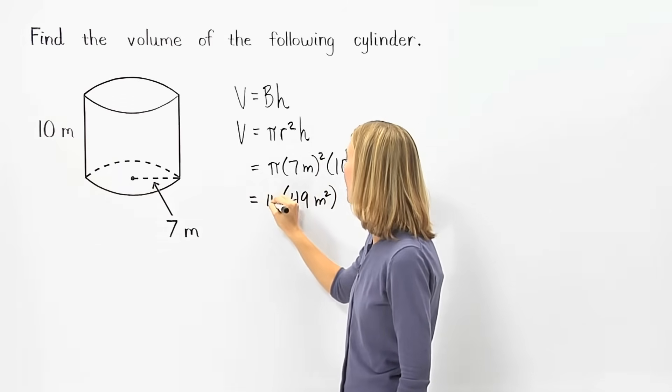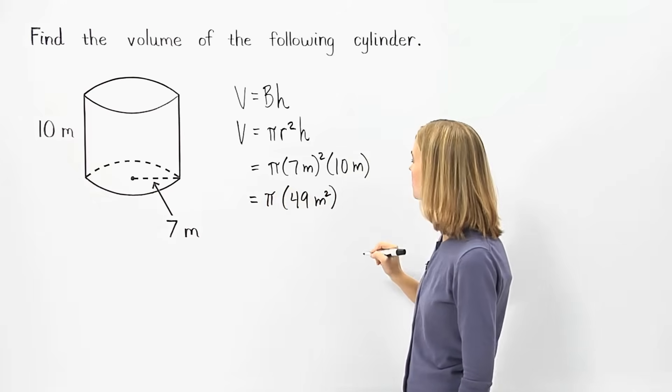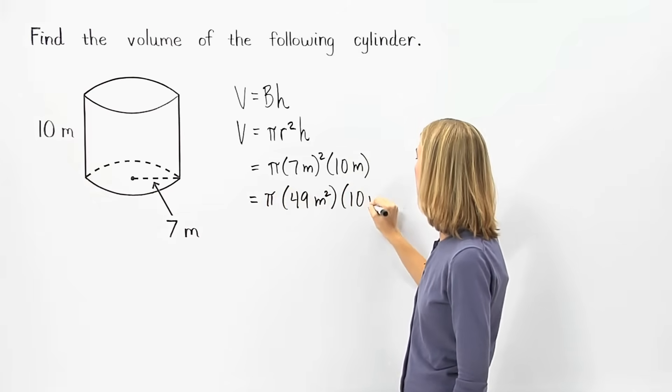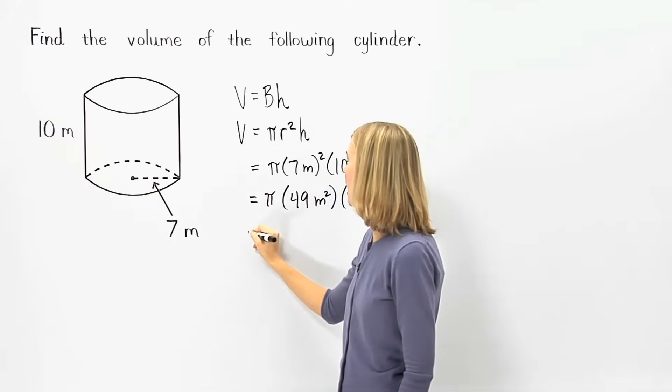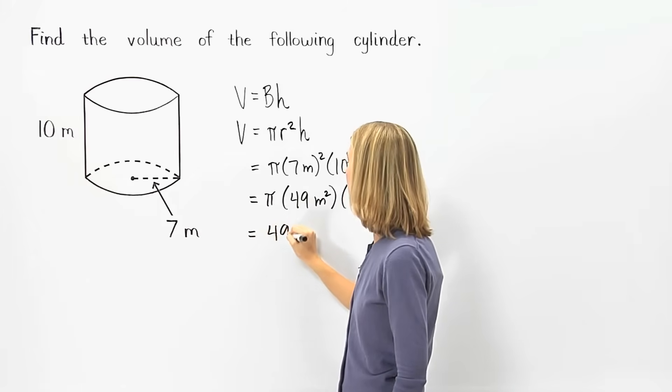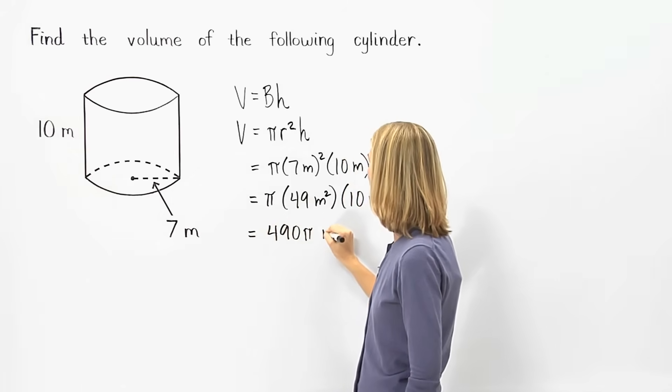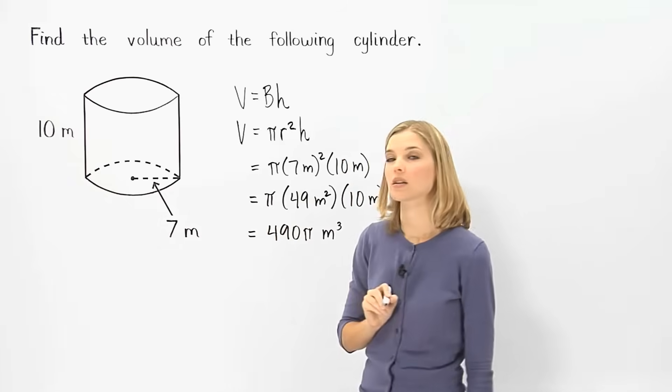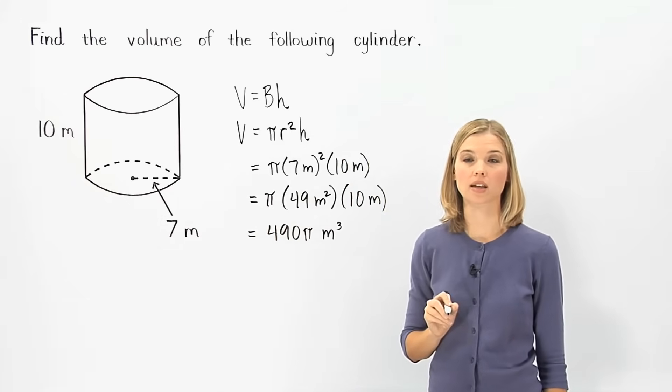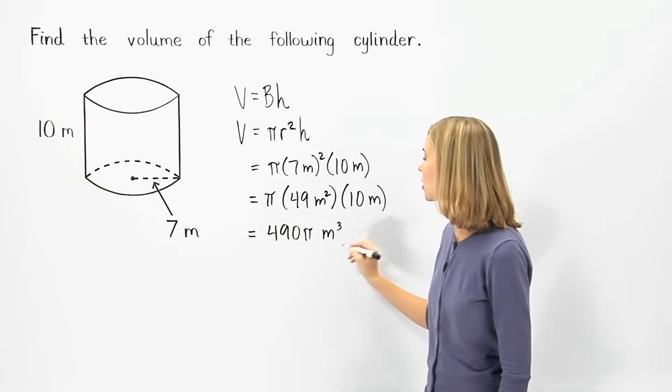And we have pi times 49 meters squared times 10 meters, which simplifies to 490 pi meters cubed. So, one way to write the volume of the given cylinder is 490 pi cubic meters.